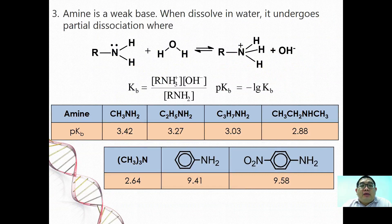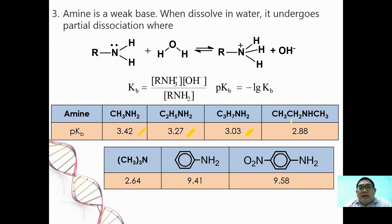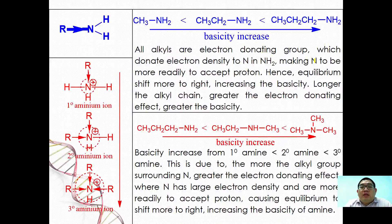Amines are considerably weak bases; when dissolved in water they undergo partial dissociation. The pKb values given are: primary amines around 3.42, 3.27, 3.03; secondary amine 2.88; tertiary amine 2.64; aniline 9.41; and N-substituted aniline 9.58. Alkyl groups are electron-donating, increasing electron density on nitrogen in NH₂ and making N more ready to accept a proton, shifting equilibrium to the right and increasing basicity. A longer alkyl chain gives greater electron-donating effect and greater basicity.